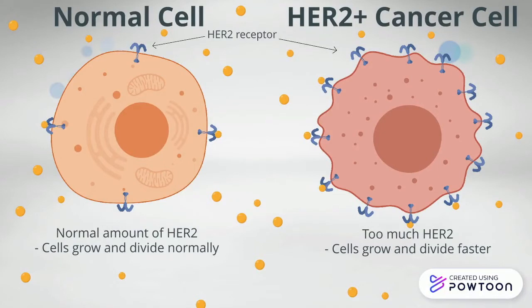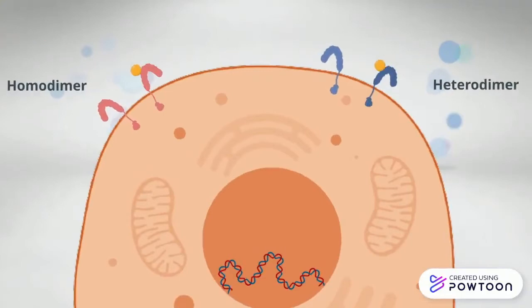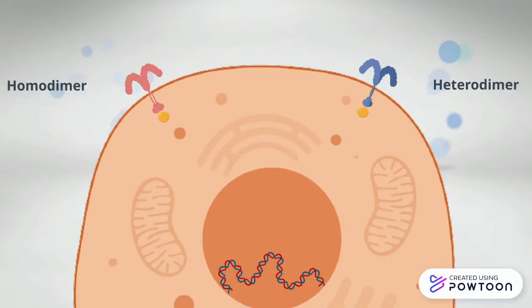The HER2 protein is a receptor tyrosine kinase that forms a homodimer or heterodimer with members of the epithelial growth factor receptor family. By serving as a co-receptor for many epithelial growth factor ligands, it initiates a network of signals that stimulate cell growth and proliferation.